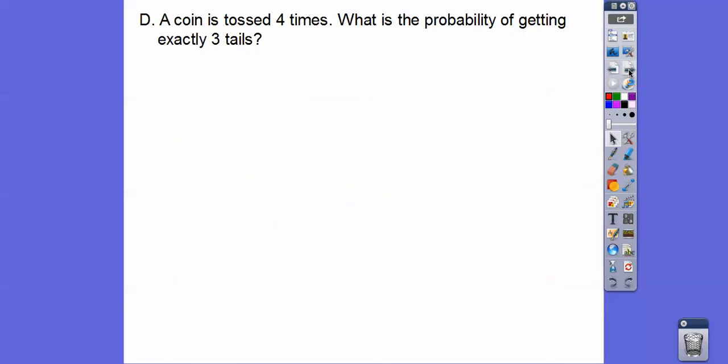A coin is tossed four times. What is the probability of getting exactly three tails? Remember, probability is a fraction answer. Number of favorable outcomes over total number of outcomes. Since there's two sides to the coin, and we're flipping it four times, then the total different number of ways we can flip a coin four times is 2 to the fourth, which is 16.